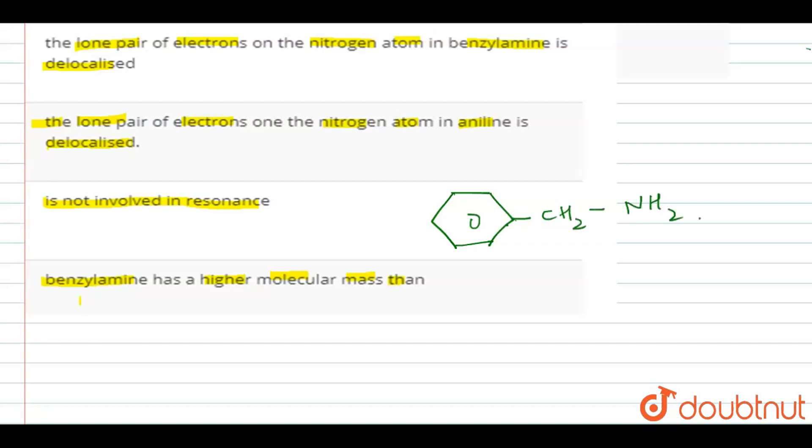CH2-NH2. So here we can see that this nitrogen has a lone pair. And in our Aniline, the nitrogen also has a lone pair.